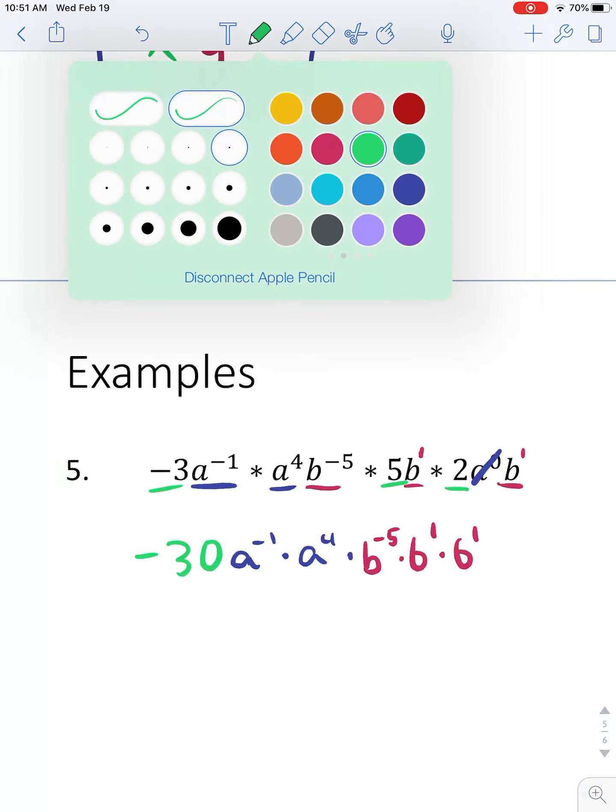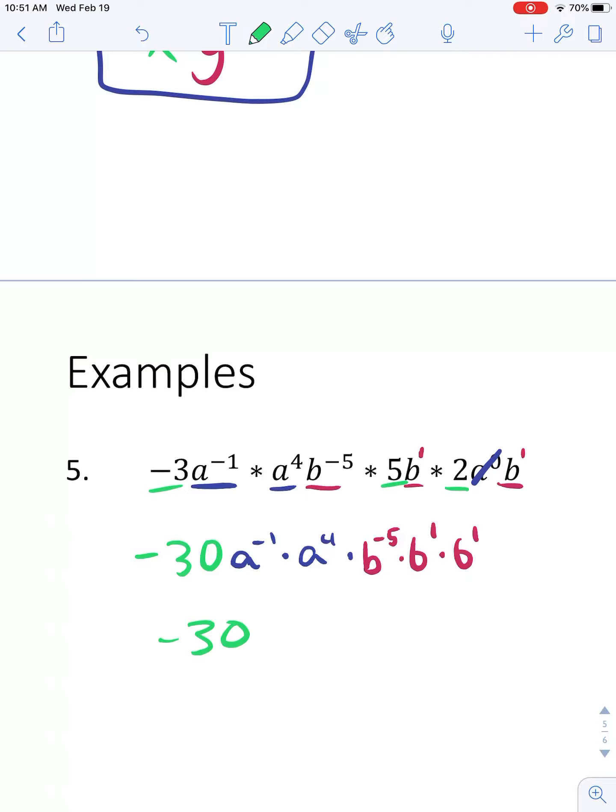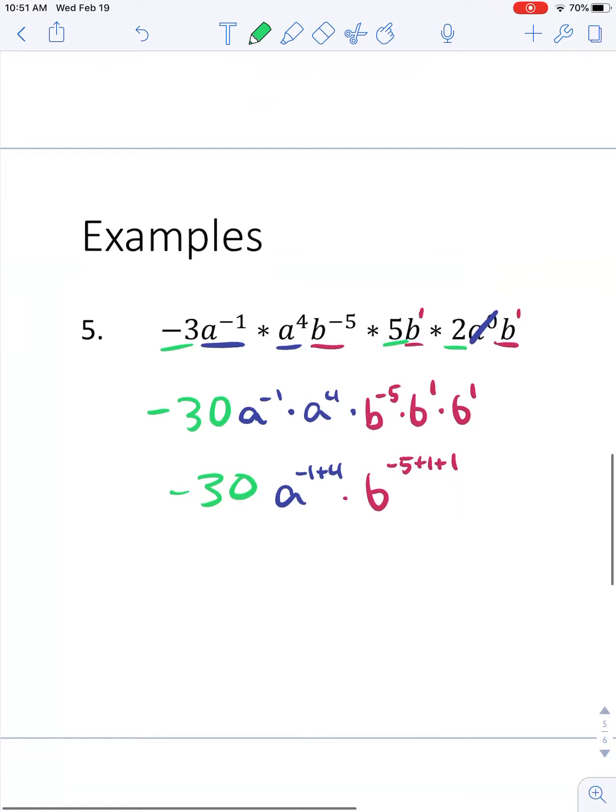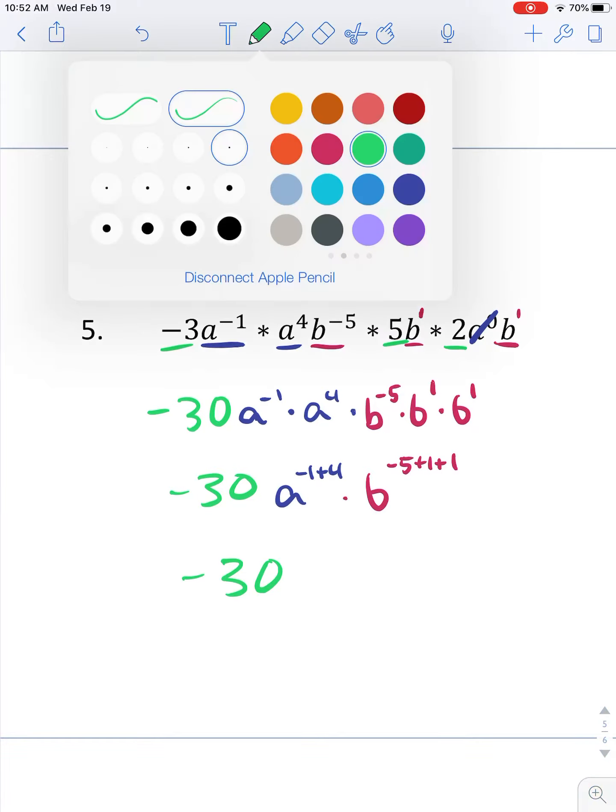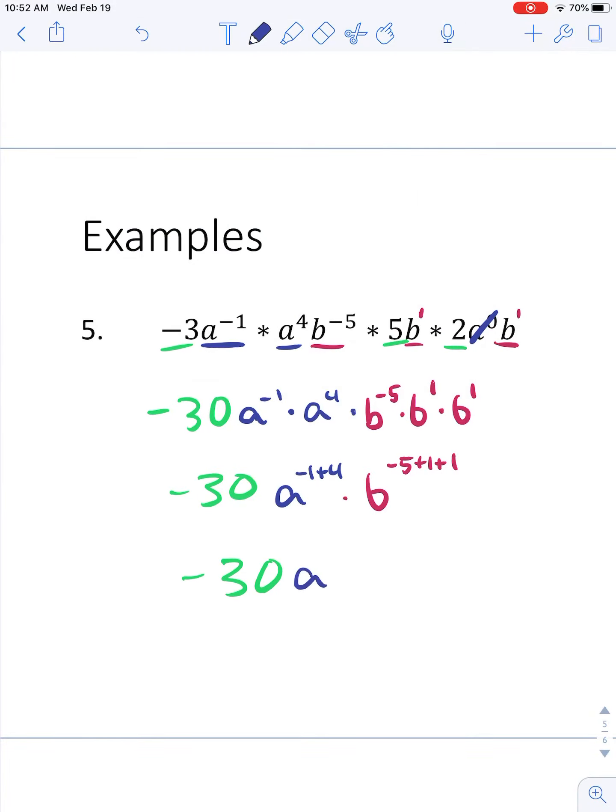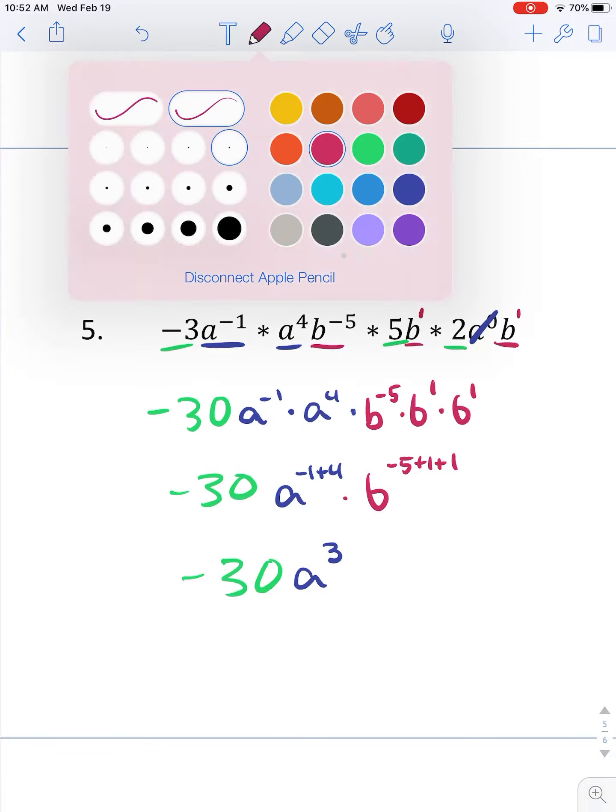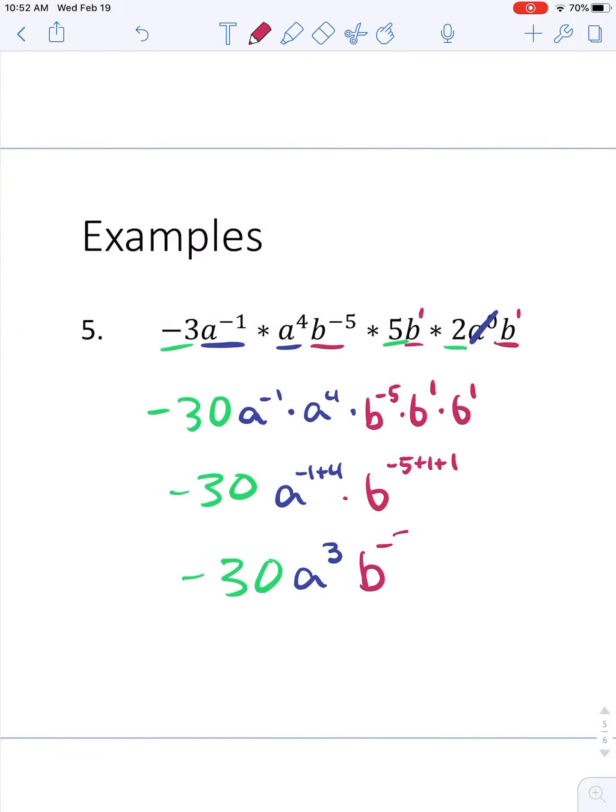Let's start putting these things together. I'm still going to have that negative 30. I'm going to have a to the negative 1 plus 4. I'm going to have b to the negative 5 plus 1 plus 1. Keep cleaning up. Negative 30, a to the 3rd, b to the negative 3rd.